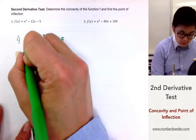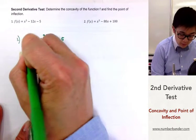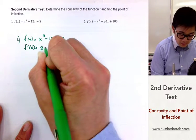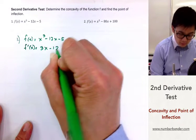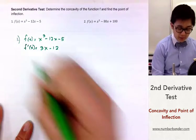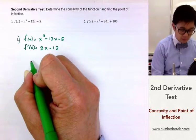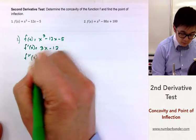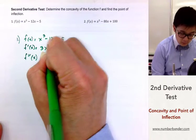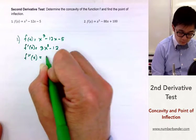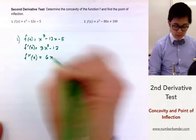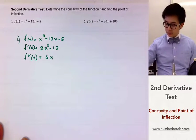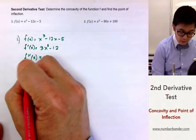We will need our second derivative, so f prime of x is 3x squared minus 12, and the second derivative would simply be f double prime of x equal to 6x.